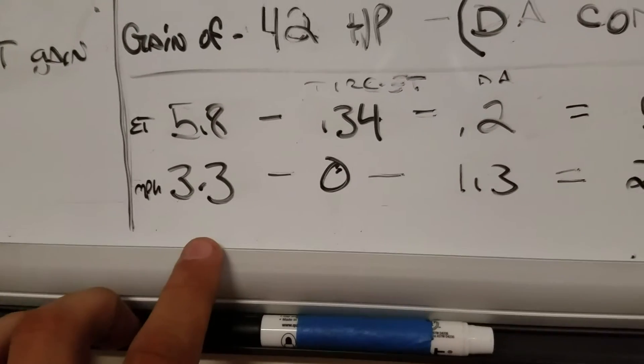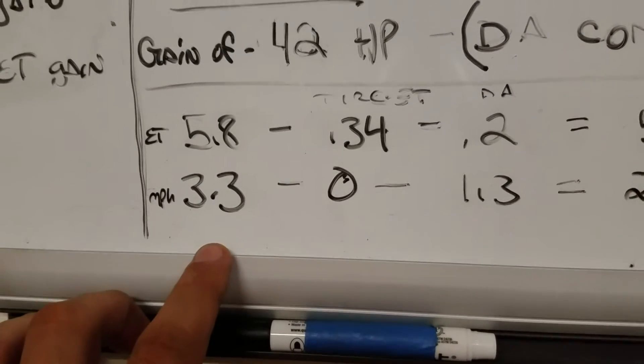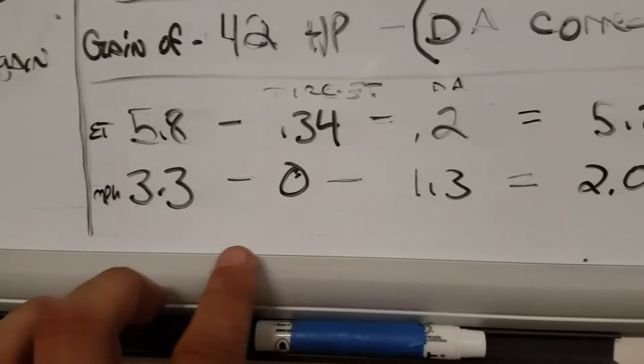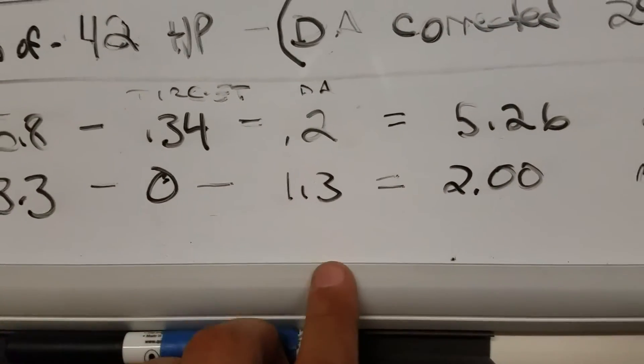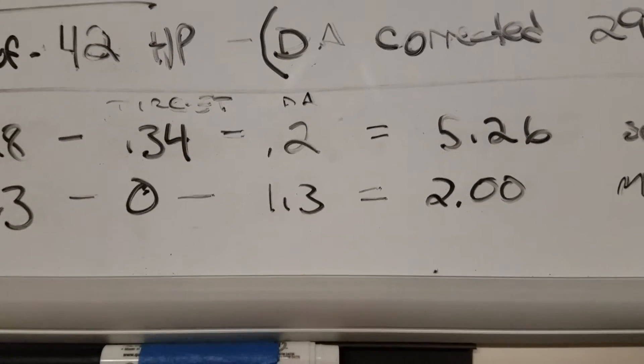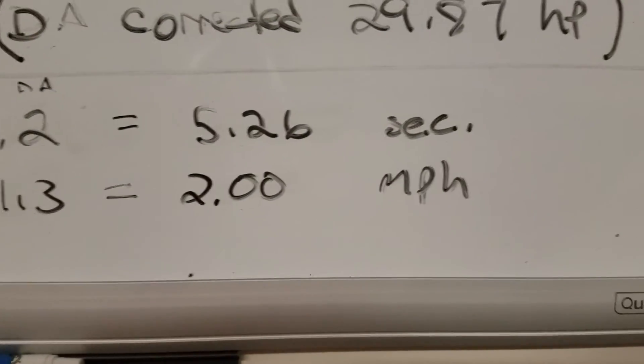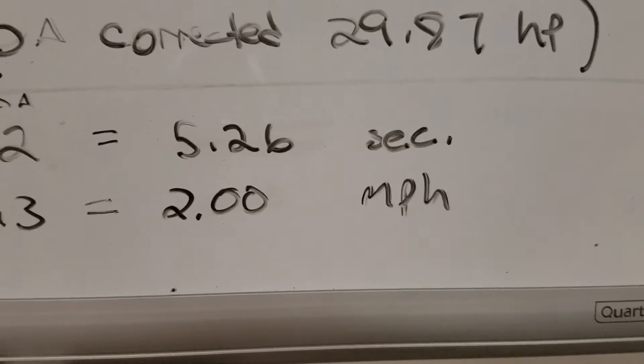And then mile per hour, I'm going to say it has gained an average of 3.3 miles an hour. Not really going to give the tire set too much credit for that. DA is going to come in and take away about a 1.3 miles an hour. So about a total of a two mile per hour increase.